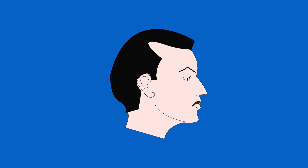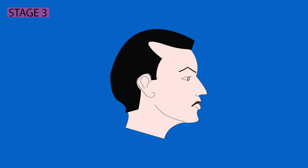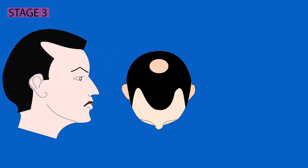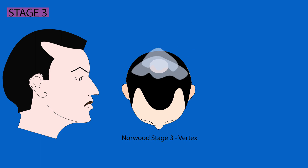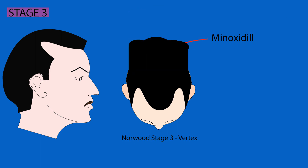Norwood Stage 3 is characterized by deep regressions at the temporal areas. If the regressions have come very close to or extended beyond the vertical line we drew earlier, it is more likely to be Norwood Stage 3. At this stage, some people may also notice hair loss at the vertex area. Medical treatment might work, but this is considered the ideal stage for hair transplant.